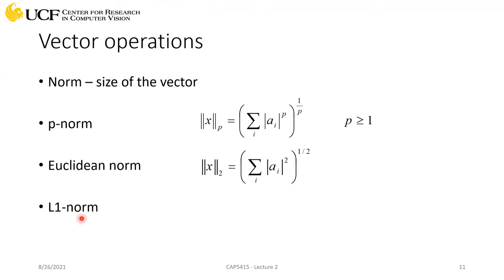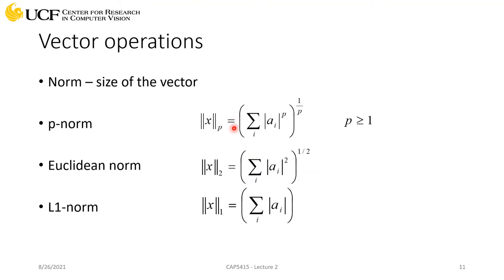Similarly, you can have the L1 norm — you just replace P with one, so you take the absolute value and sum all those values. The one-over-one factor just equals one, so you can ignore it. There is no normalization here. The L1 norm gives you just one number — it's giving you the magnitude of the vector. There are different variations you can use to compute the magnitude in different ways.